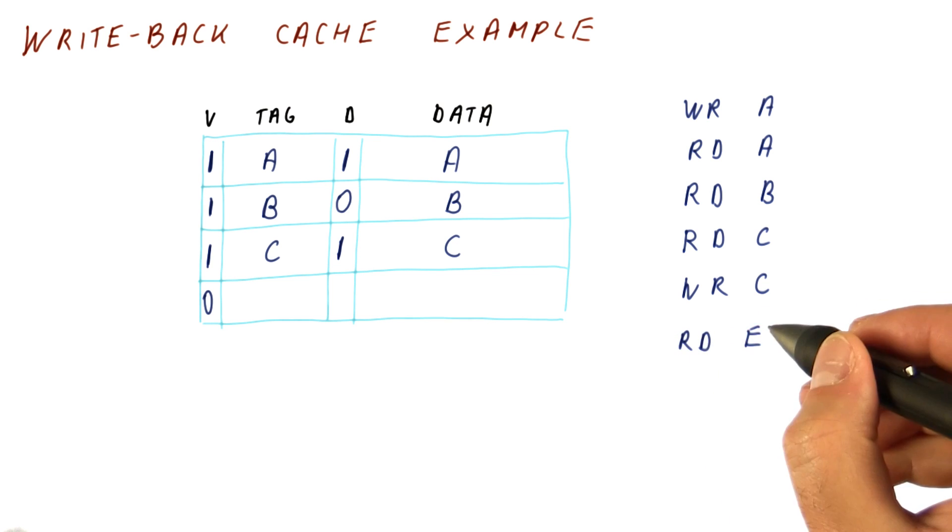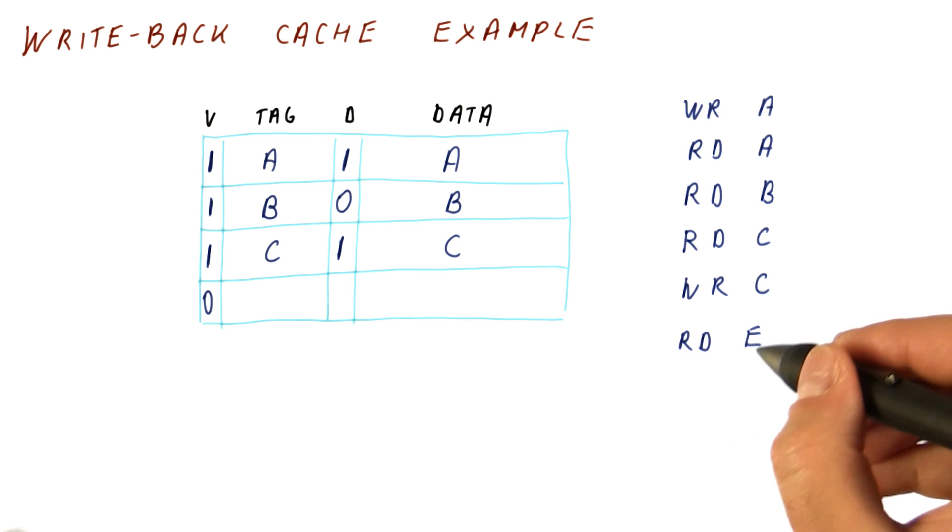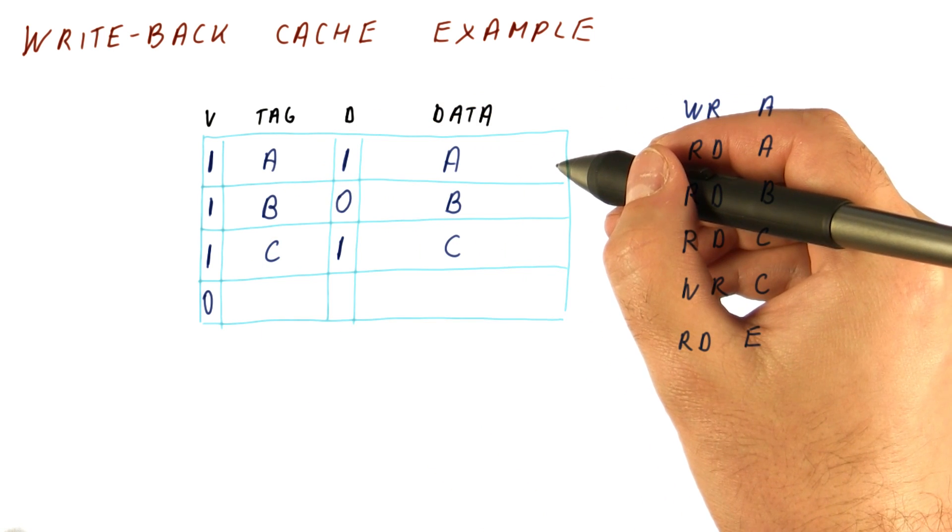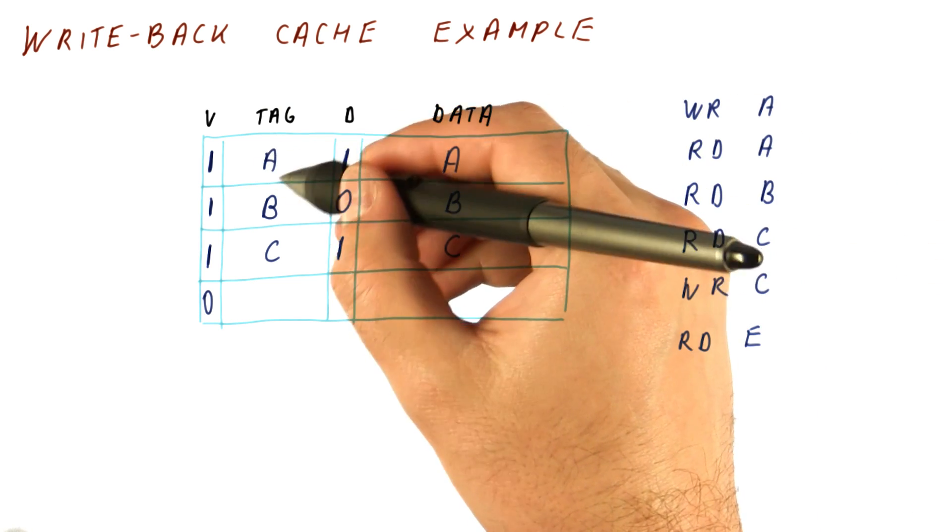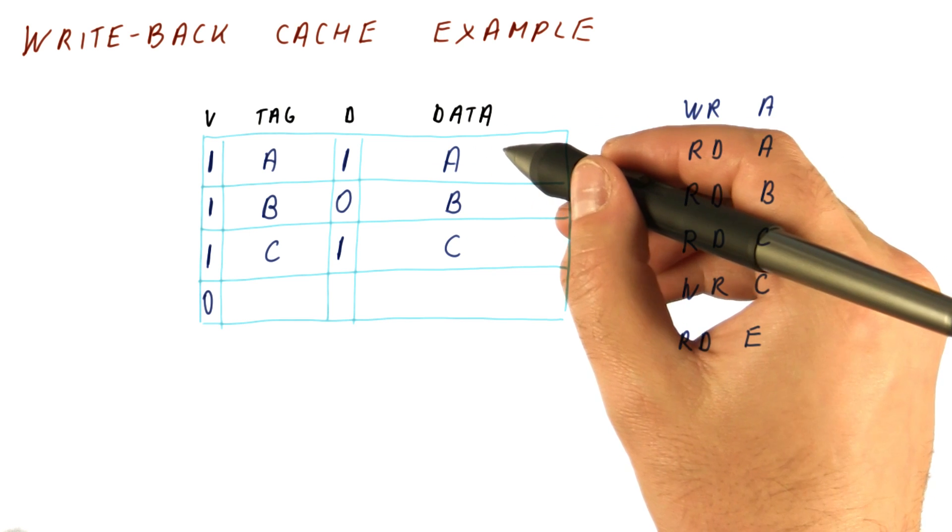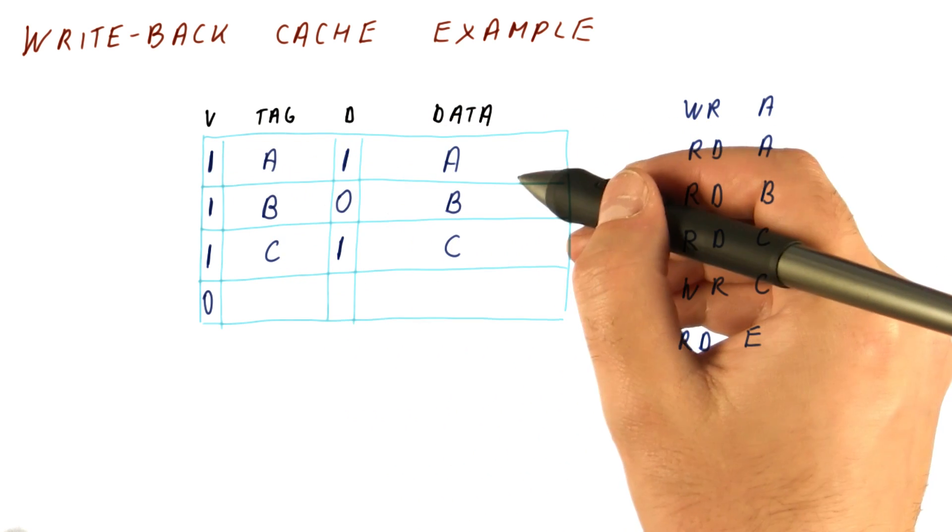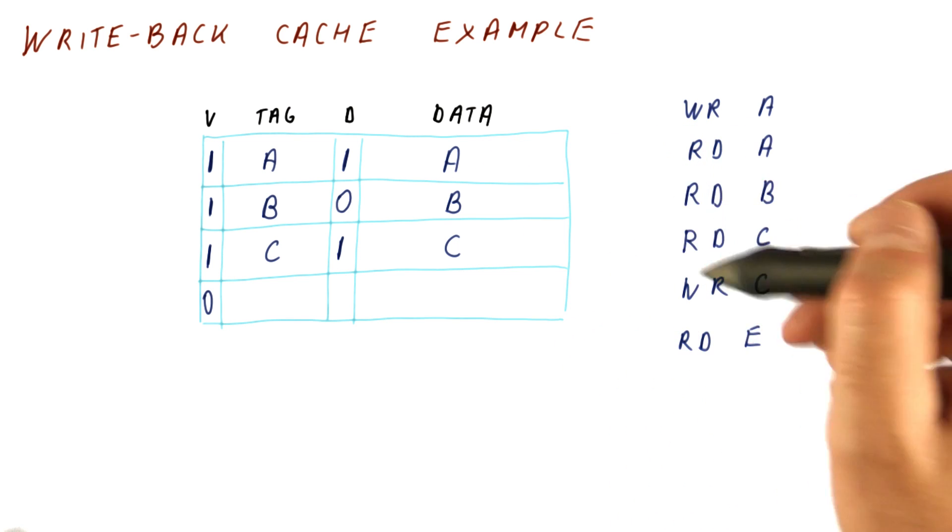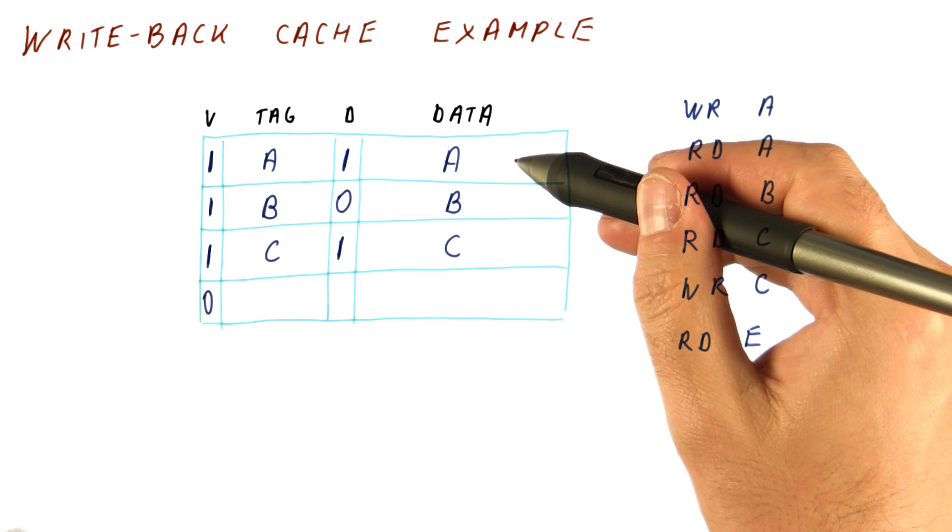Let's continue this by an access to E that is a read. And let's say that E maps where A is. So now what needs to happen is we're going to check here to see whether the tag matches E. It doesn't, so we have a miss. Our replacement policy is simple for direct map caches. We simply replace whatever is there. So at this point, we cannot just bring in E from memory.